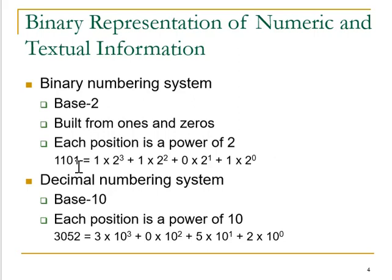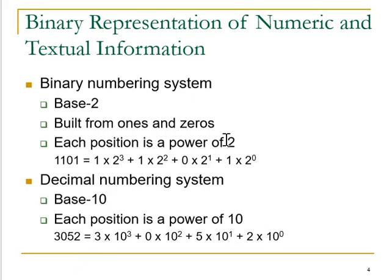So we represent this as 1 into 2 to the power 0, 0 into 2 to the power 1, 1 into 2 to the power 2, and 1 into 2 to the power 3. Similarly we have the decimal numbering system which is represented as base 10. Here each position is a power of 10. We have taken an example of 3052 and represented it in terms of 0th digit, first digit, second digit, and third digit in terms of powers of 10.